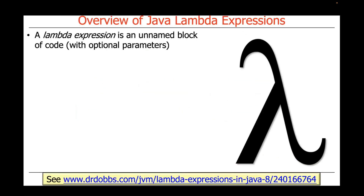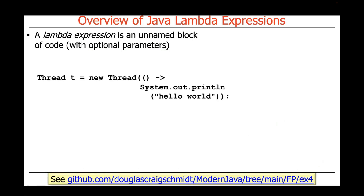So what is a Lambda Expression? A Lambda Expression is very straightforward — it's an unnamed block of code that might have some parameters. Here's a super simple example we're going to look at in more detail in just a minute. This is making a new thread. Thread is a unit of computation that can perform some operations running potentially concurrently with other threads within a process.